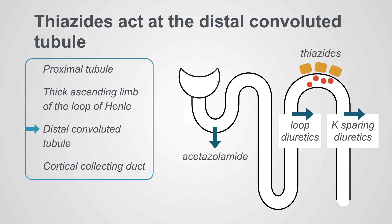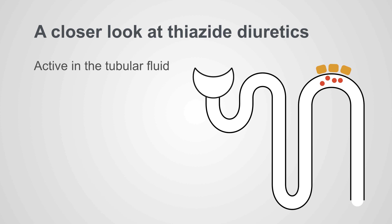Thiazide diuretics act at the distal convoluted tubule. This is the third stop in the kidneys as we work through the nephron looking at sodium handling. Thiazide diuretics act after the loop diuretics.